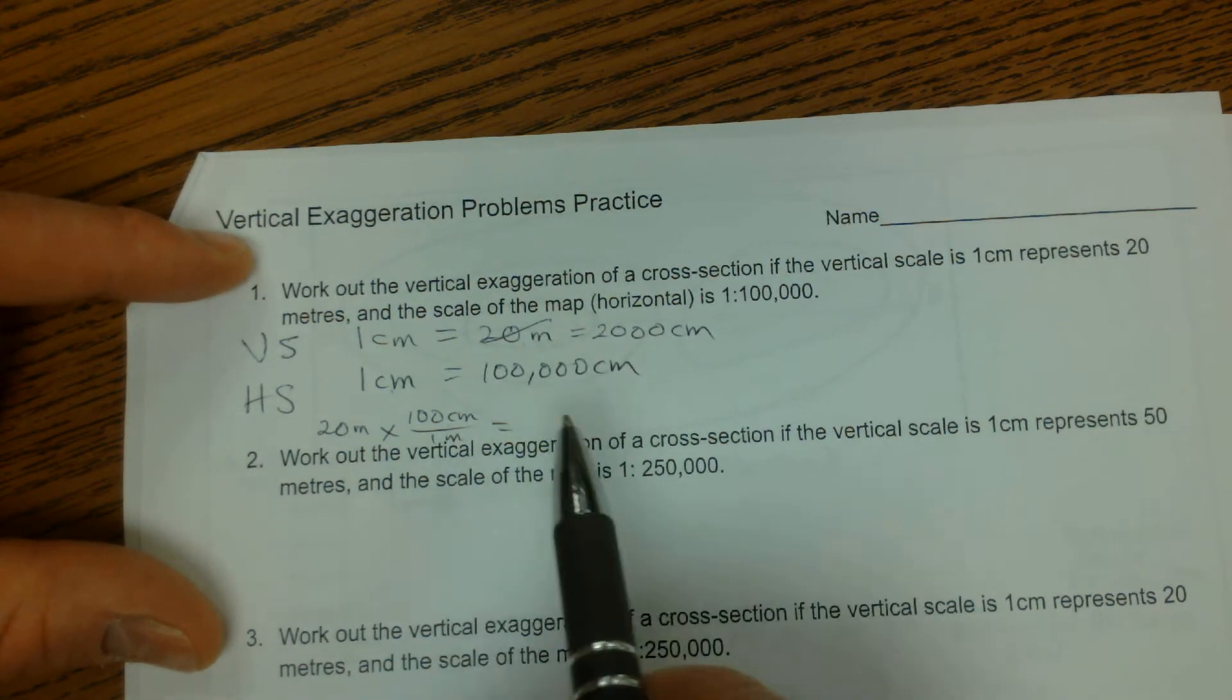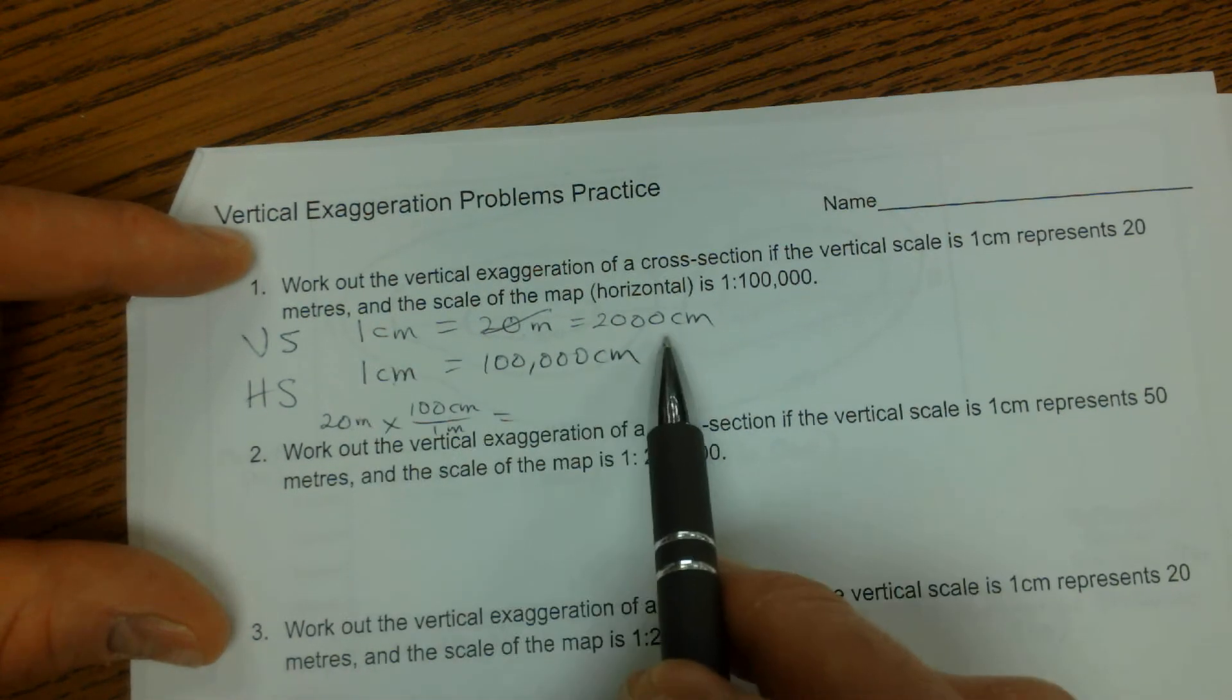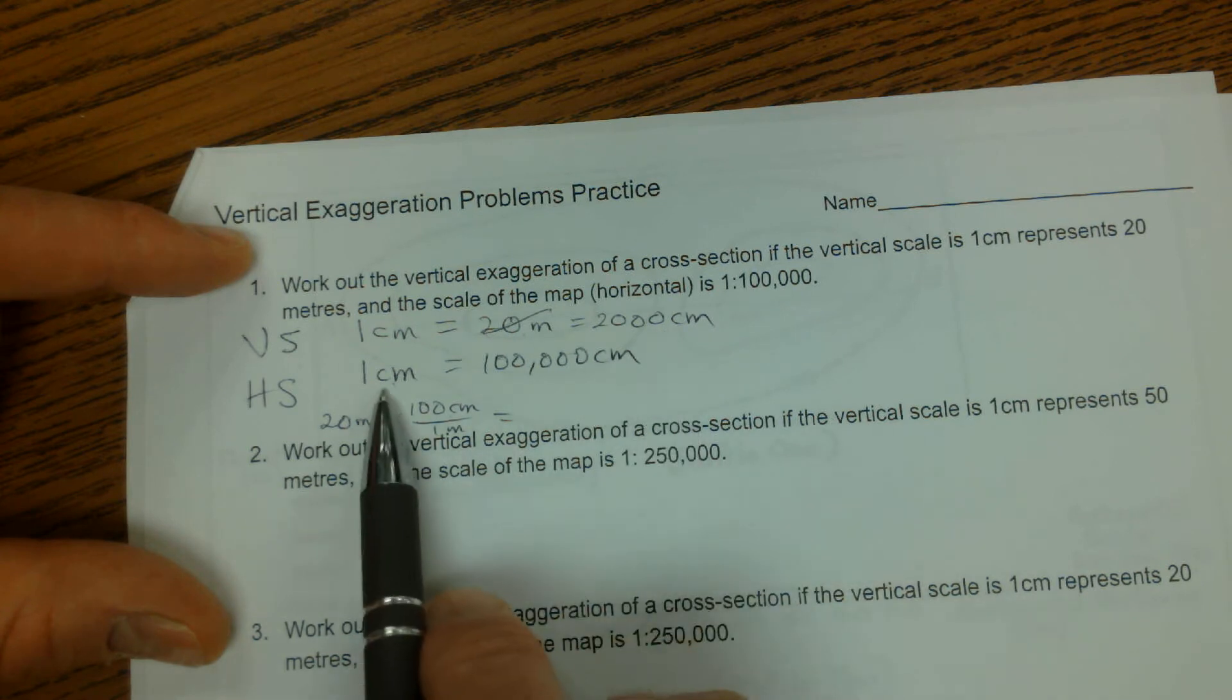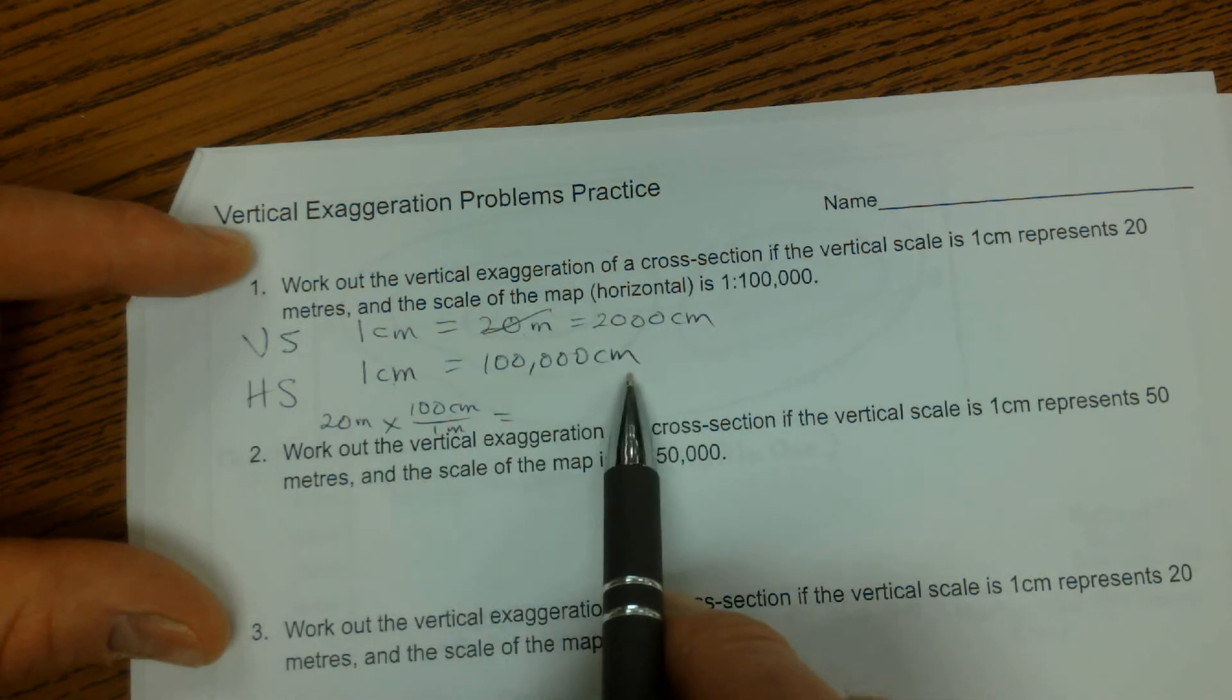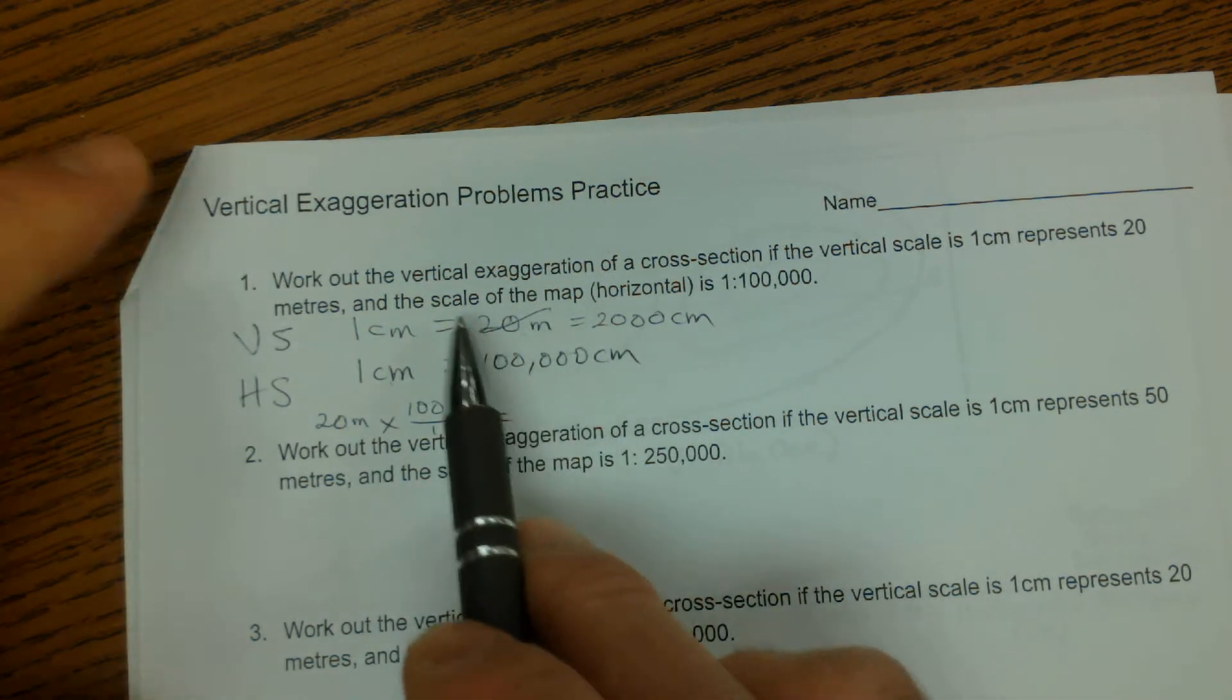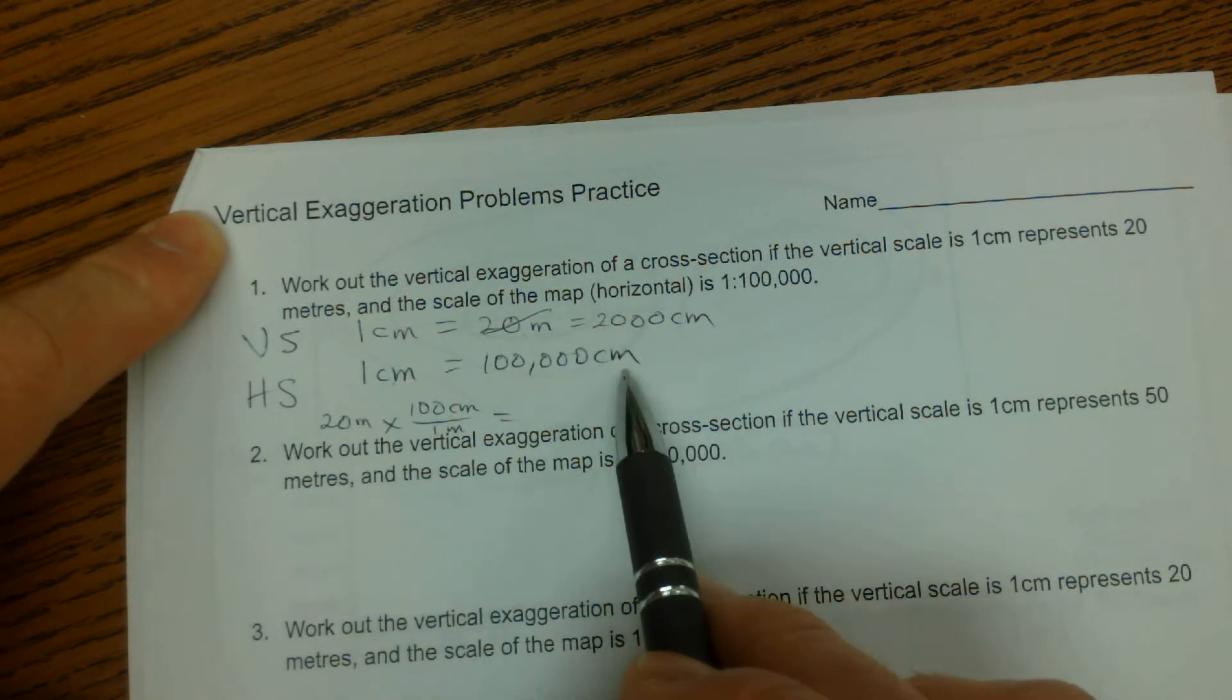So we'll just get rid of that part. So now I have a scale that says 1 centimeter is 2,000 centimeters, and 1 centimeter is 100,000 centimeters. These two are in the same units. These two are in the same units.